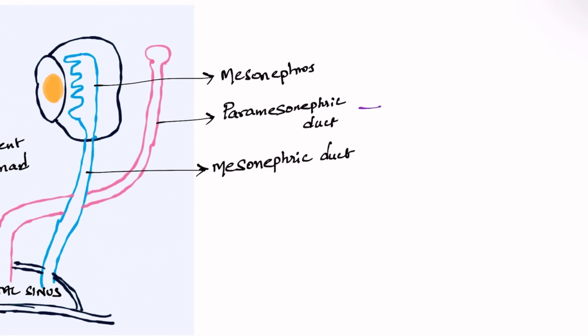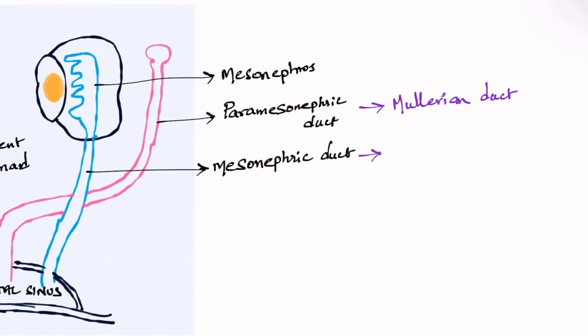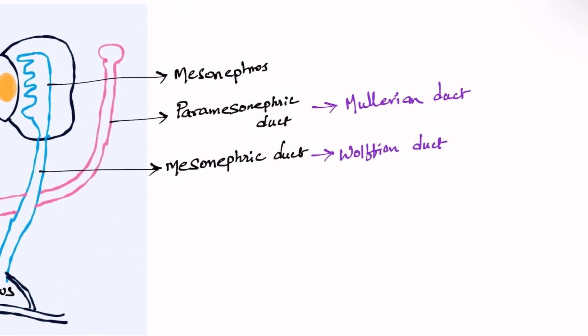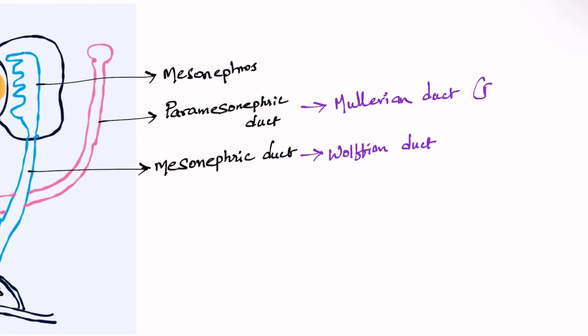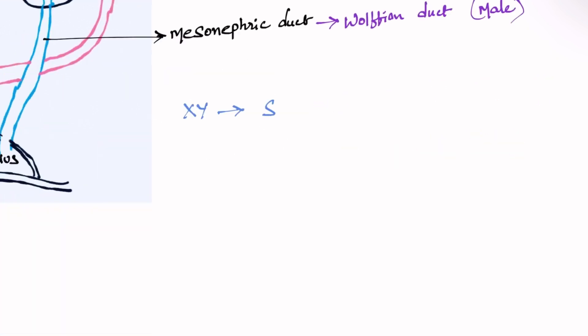The paramesonephric duct is also called the Mullerian duct — it is a female structure. The mesonephric duct is called the Wolffian duct — it is a male structure. Male structures develop from the mesonephric duct.